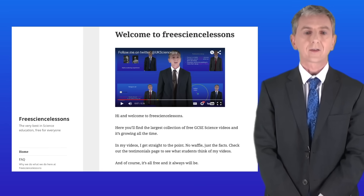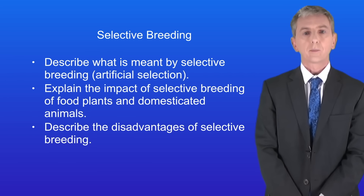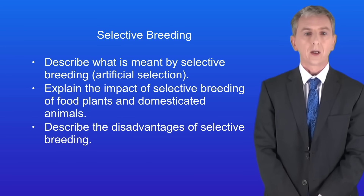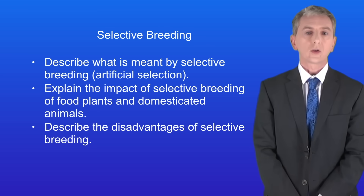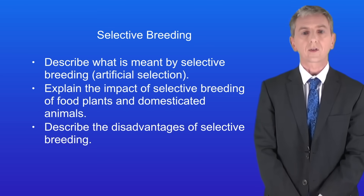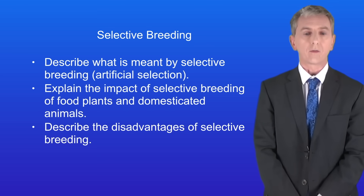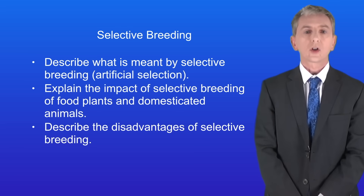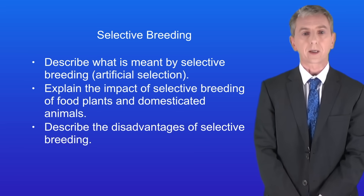Hi and welcome back to freesizelessons.co.uk. By the end of this video you should be able to describe what's meant by selective breeding, which is also called artificial selection. You should then be able to explain the impact of selective breeding of food plants and domesticated animals, and finally describe the disadvantages of selective breeding.